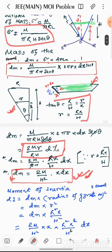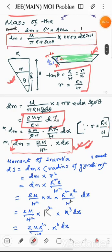Moment of inertia of the element which is a ring about the axis passing through its center: dI equals to dm into radius of gyration squared. Here radius of gyration is the radius of the circular ring and dm into r square, small r square.